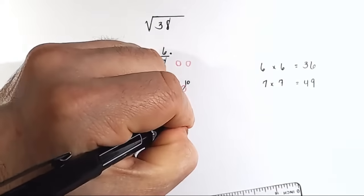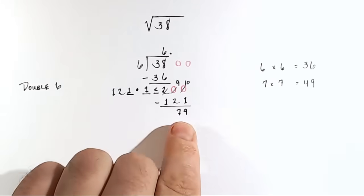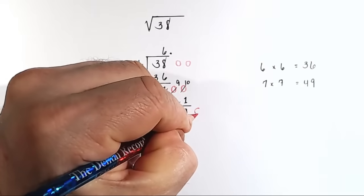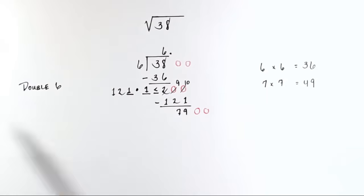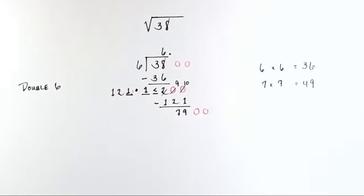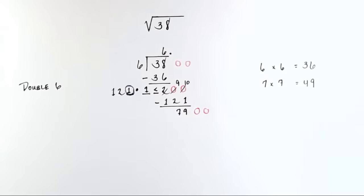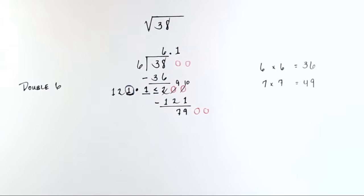10 minus 1 is 9. 9 minus 2 is 7. So now we're looking at 79, and we will bring down two more zeros. So our next step is to evaluate up to 7,900. But we have accomplished something awesome. This number right here, 1, is the tenths place of the approximated square root. So we'll go in here and put 6.1.